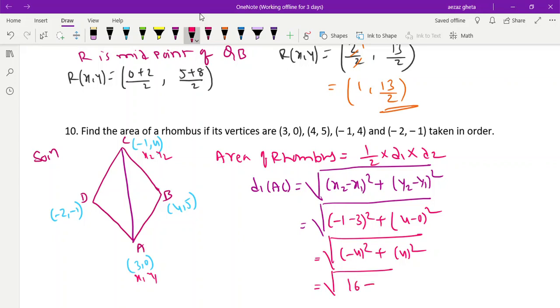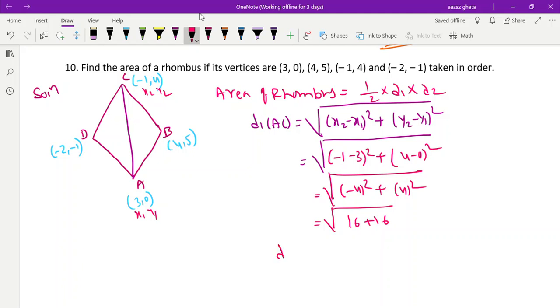Under root, 4 square is 16 plus 16. So diagonal 1, what we'll get? √32 can be written as 16 into 2. 4√2 units.